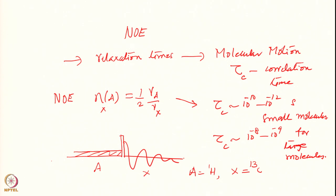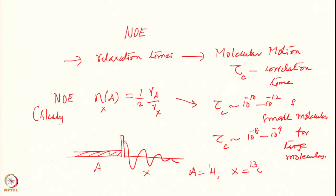That is a significant advantage because a factor of 2 enhancement in intensity is equivalent to a factor of 4 savings in signal averaging time. The steady-state NOE in the extreme narrowing limit — applicable to small molecules with very rapid motions — gives this result. Here tumbling is very rapid, motions are very fast, averaging happens much better, and relaxation times are very different.